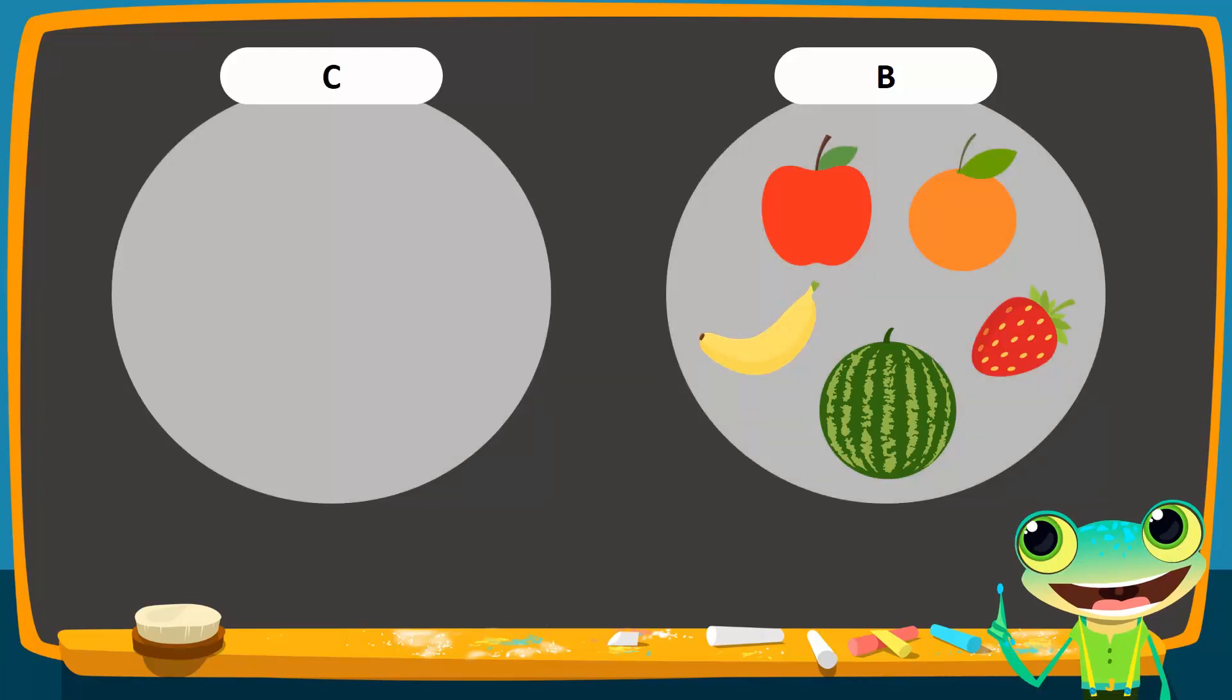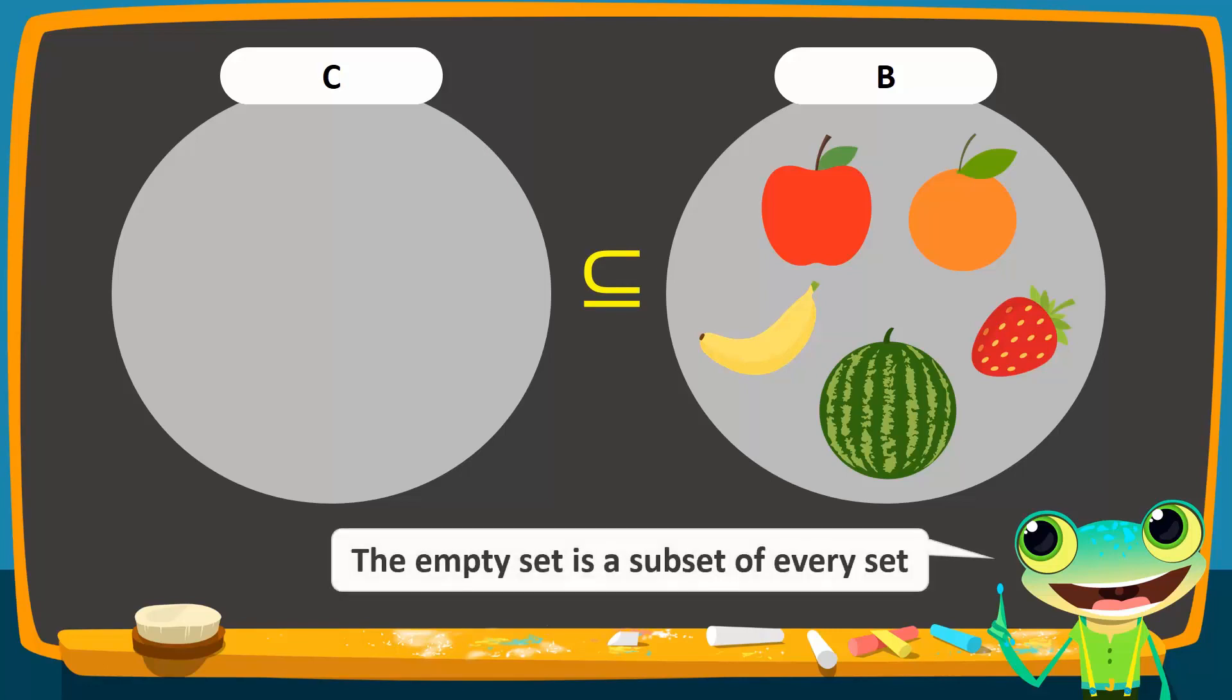Moving on, study these two sets. Set B is from the previous example, while set C is an empty set. Since set C contains no elements, we can say that all its elements are also contained in set B. Therefore, set C is a subset of set B. In fact, the empty set is a subset of every set.